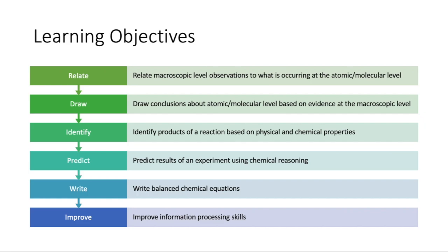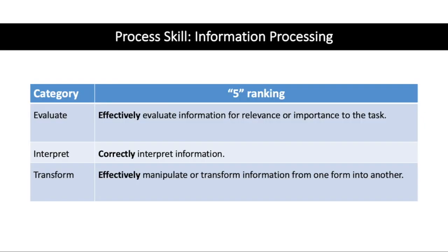As you're completing this lab, you'll also be asked to provide the evidence and reasoning that you use to link the products to your observations. We'll also ask you to write balanced chemical equations. Our process skill for today is information processing, because the information you see is that macroscopic information — what's happening in the beaker — and you have to translate that into another kind of information, like a chemical equation or a description of the type of reaction.